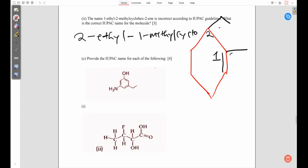That's the proper way we should be able to name this structure, giving the lowest position to the alkene part, the double bond. We've given it carbon position 1.